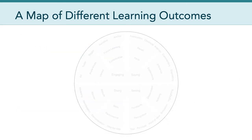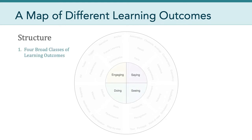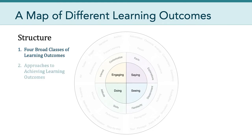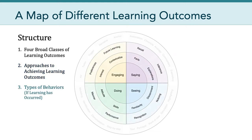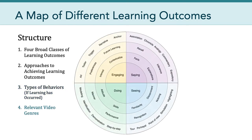Let's take a closer look at the concentric circles of this diagram. There are four levels. In the center are four broad classes of learning outcomes: seeing, doing, engaging, and saying. From there, a layer identifies different approaches to achieving those outcomes. Moving outward one more level, we see the types of behaviors we might expect from a learner if learning has occurred. And finally, the outermost band specifies relevant video genres applicable to achieving a certain type of learning outcome.